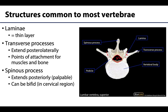Projecting posterolaterally, you have transverse processes, which vary considerably in length and shape depending on whether we're looking at cervical, thoracic, or lumbar vertebrae. They are important for attachment of deep back muscles as well as for articulation with ribs in the thoracic region. The most posteriorly projecting portion is the spinous process, which is palpable — running your hand down your back in the midline, you are palpating all the spinous processes. These can occasionally be bifid, which is seen in the cervical region.